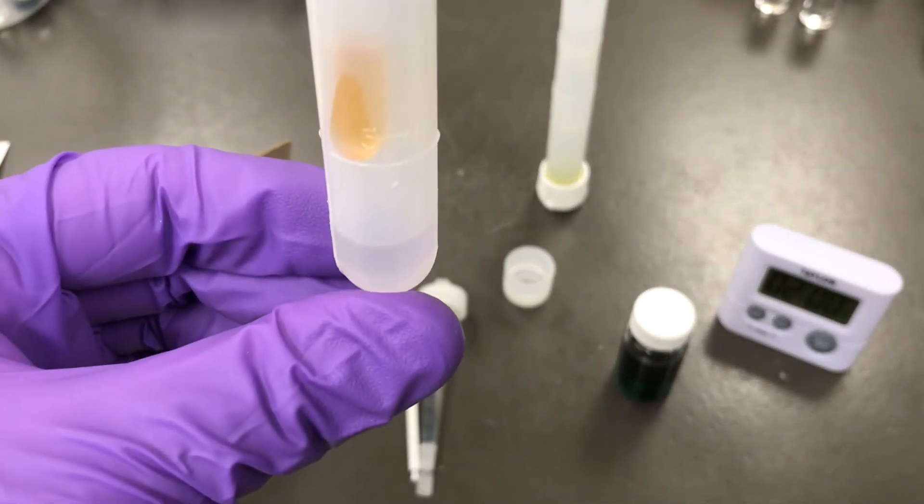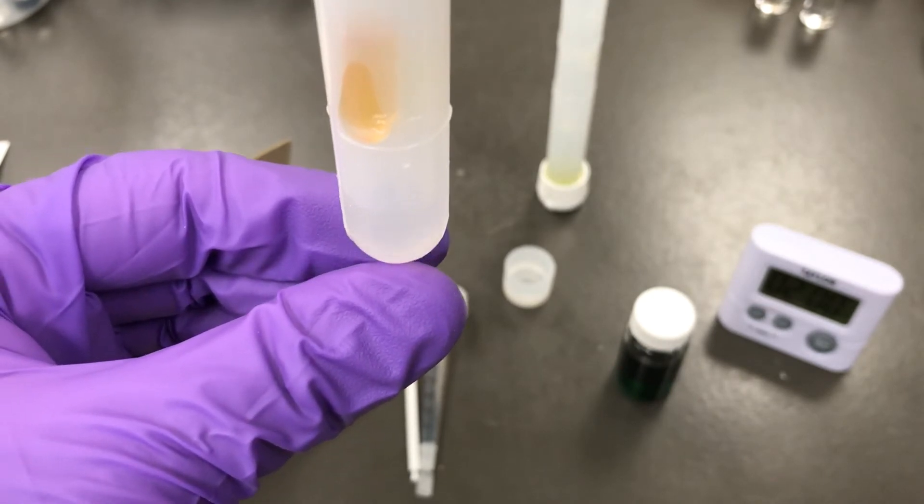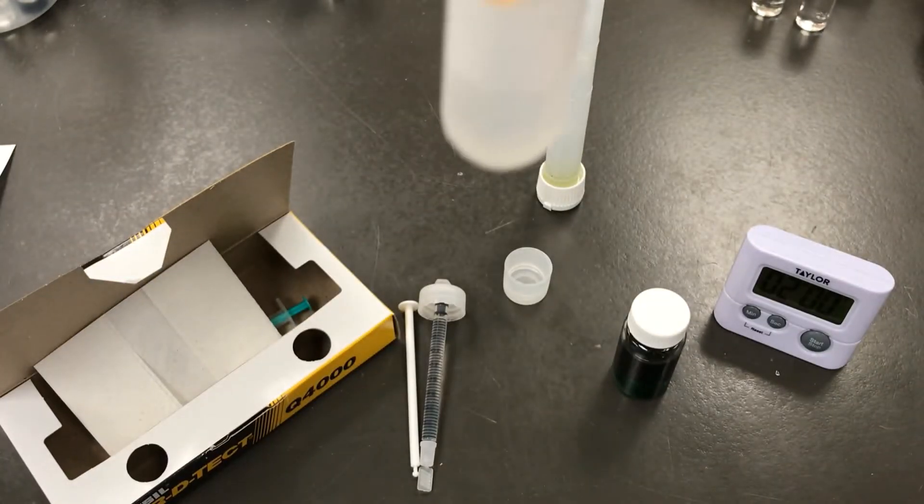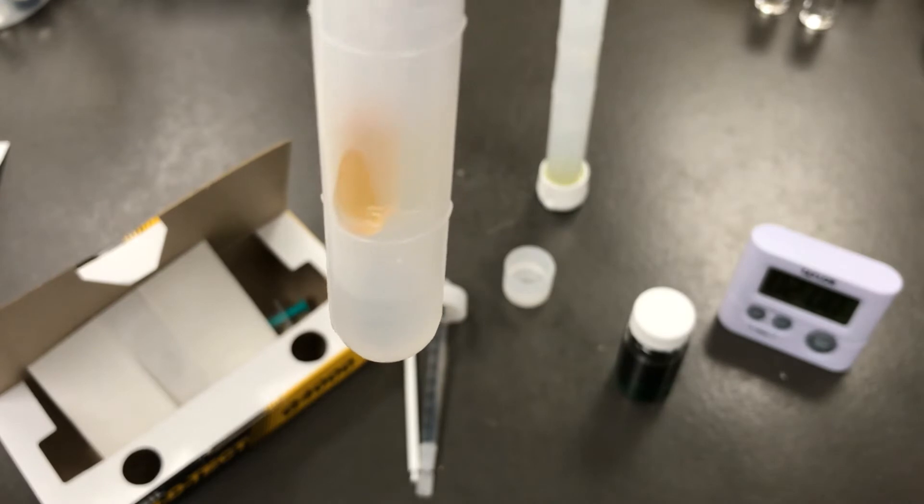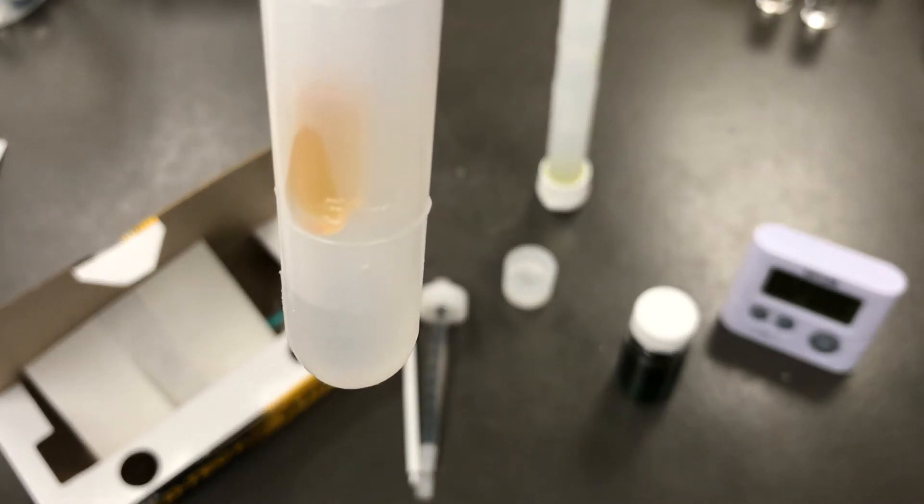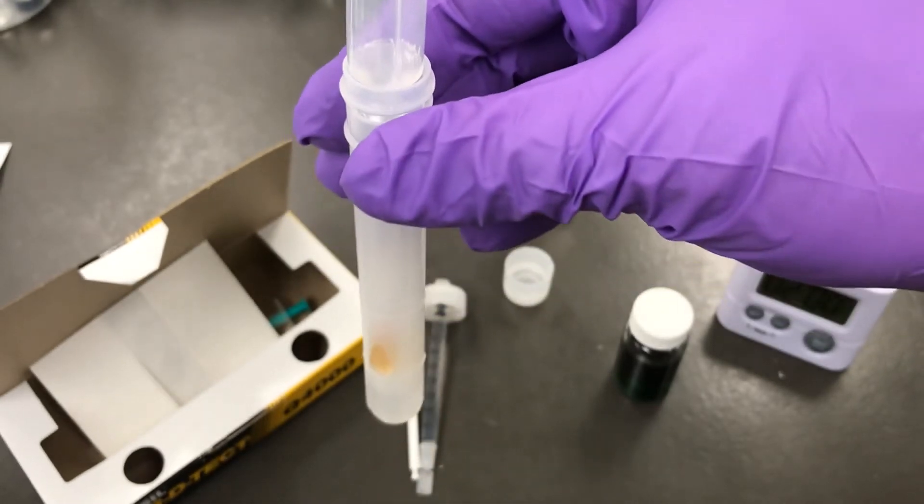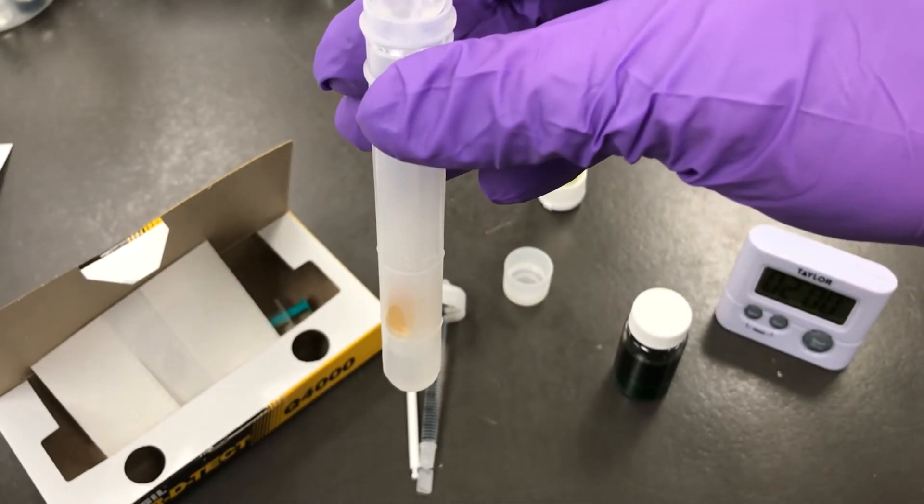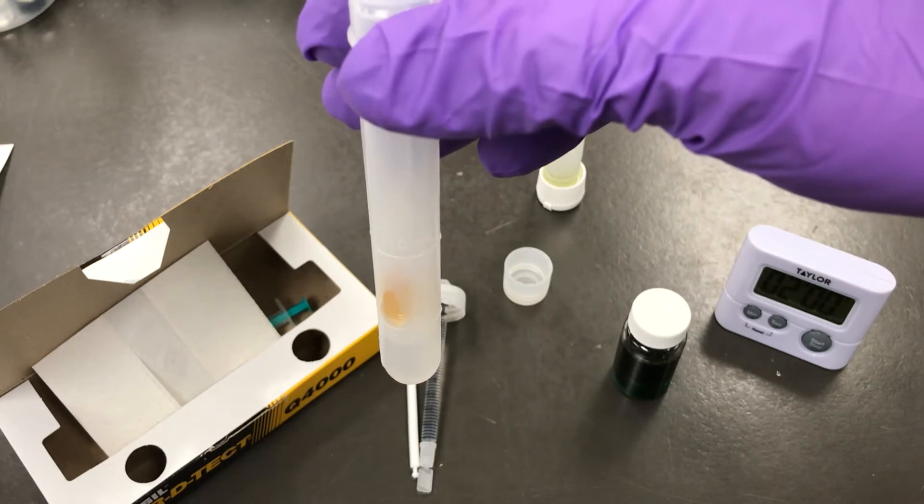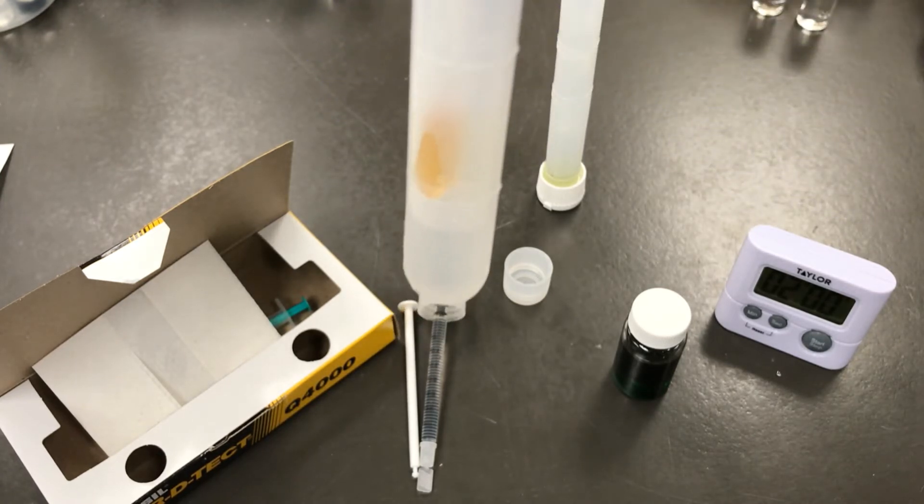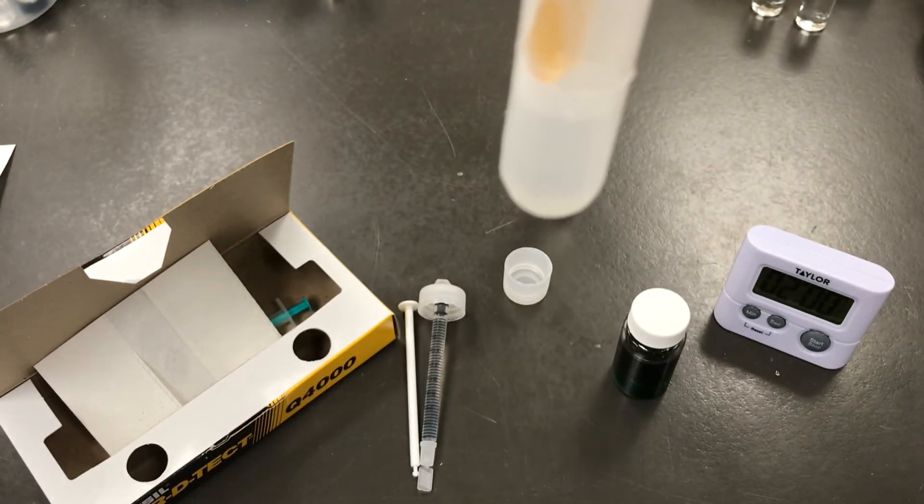And you're going to allow that liquid to filter through the funnel until the tube is filled up to the 5 milliliter line that's embossed on the side. It's important not to try to hurry this step either. You don't want to squeeze the funnel or try to push the liquid through faster than its natural speed. Just allow it to filter at its own pace.